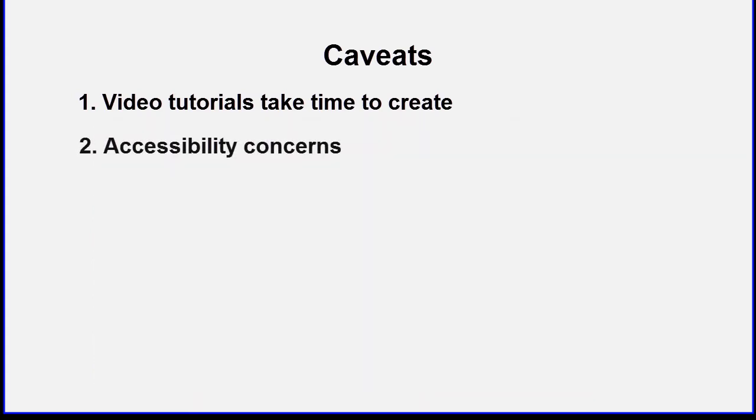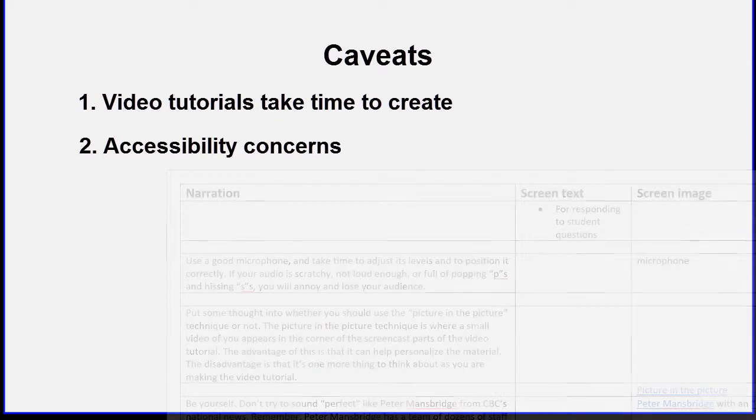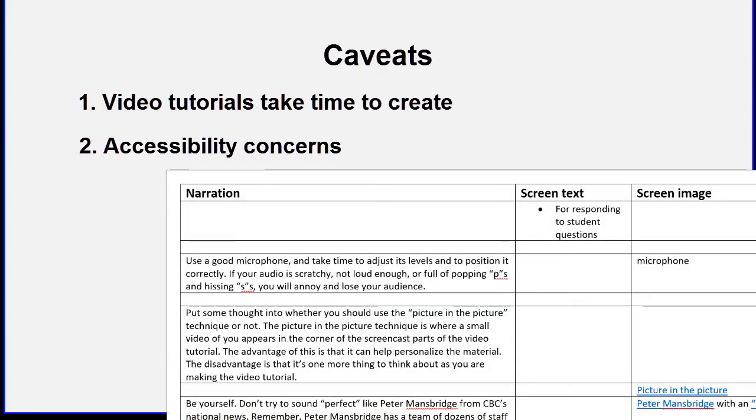Second, you need to be aware of accessibility concerns. For example, students with severe hearing impairments won't be able to hear what you are saying in a video tutorial. Accordingly, you should be prepared to at least provide those students with the script you used when you created the video tutorial.